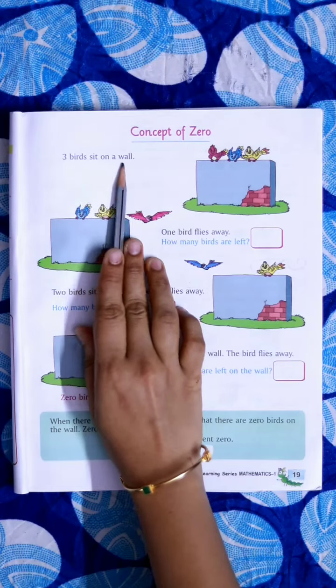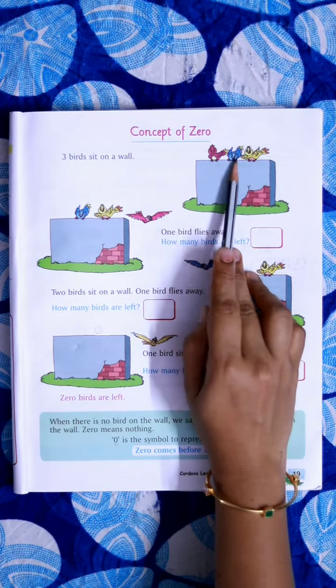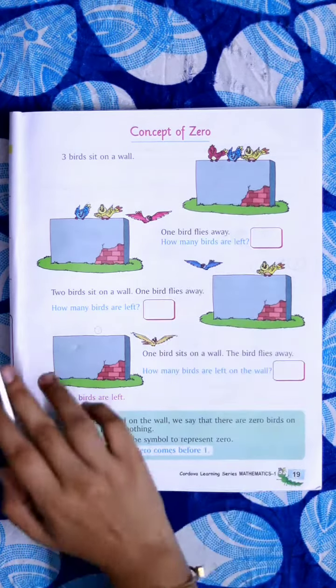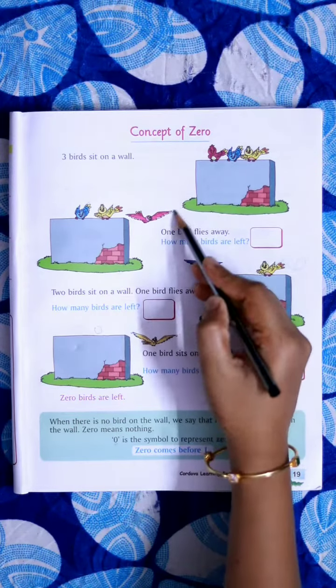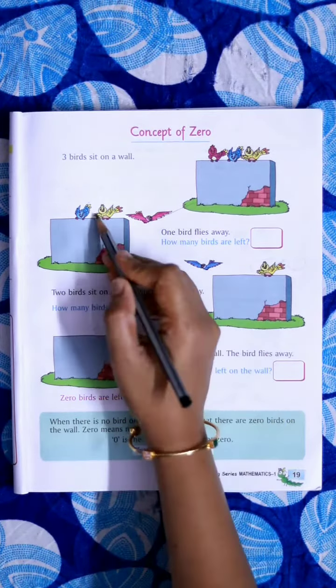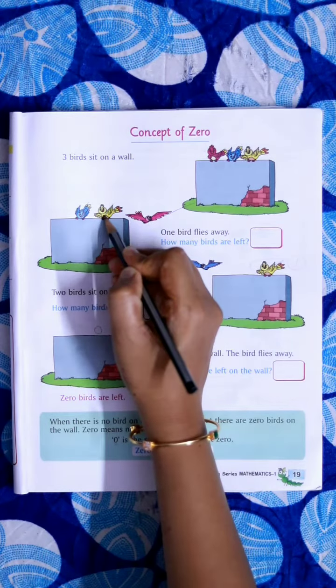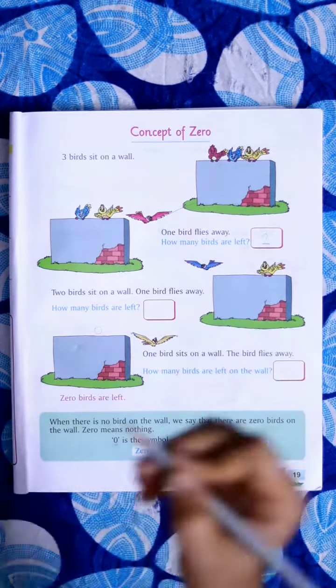Three birds sit on a wall. One bird flew away. So how many birds left? One, two. So we have to write two here.